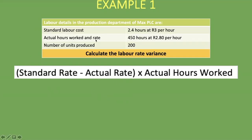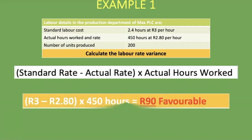The actual rate is 2 rand 80 per hour, and the actual hours worked are 450. Applying the formula: (3.00 − 2.80) × 450 = 90 rand favorable. This is favorable because we planned to pay 3 rand but only ended up spending 2 rand 80.